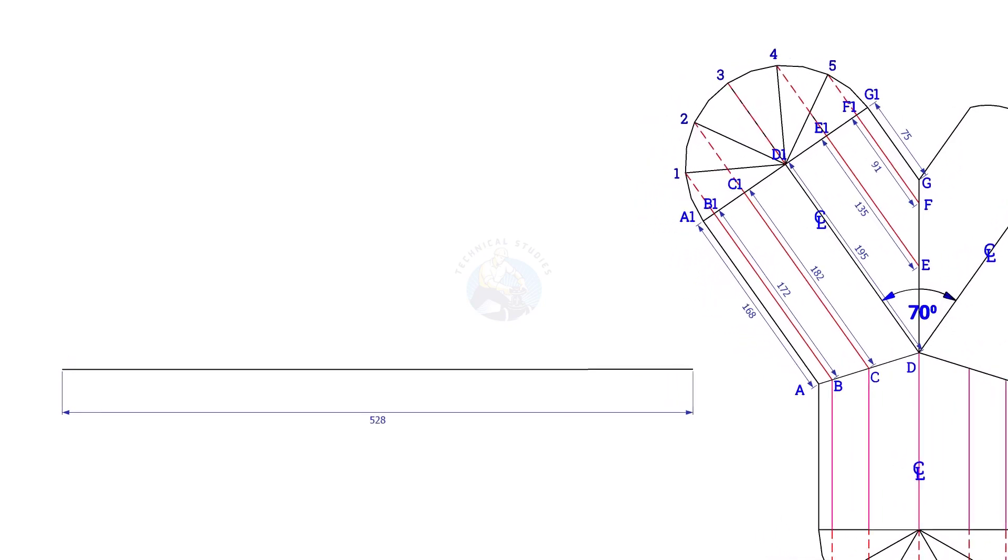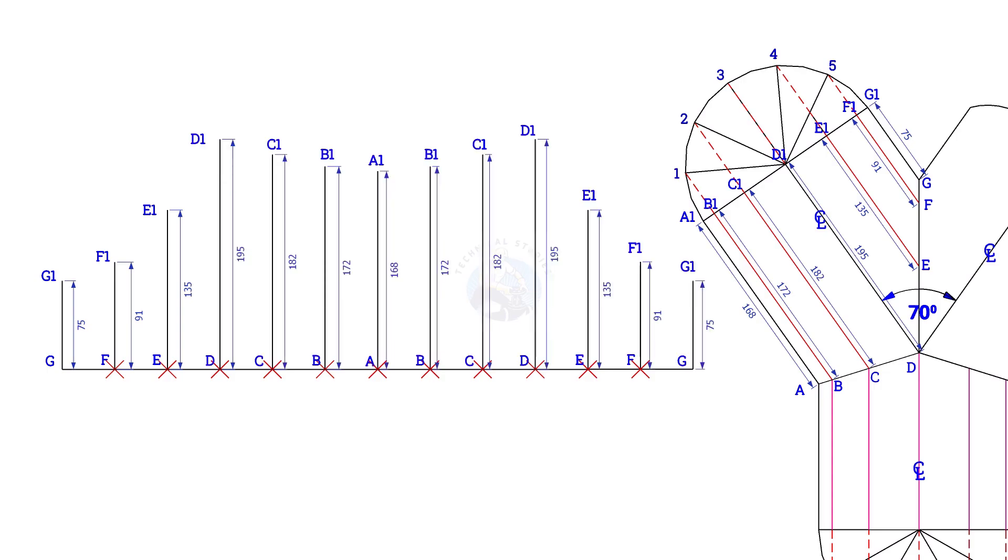Draw the pipe circumference line. Divide the line to 12 equal parts and draw vertical lines G, G1, F, F1 etc. and draw a curve as in the previous layout.